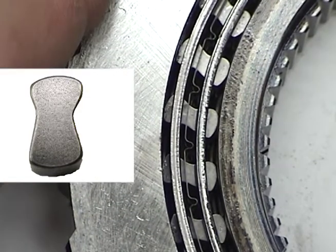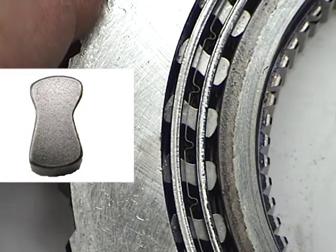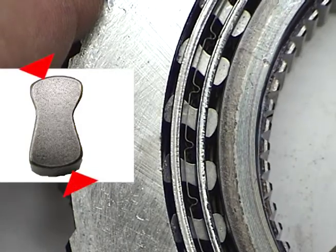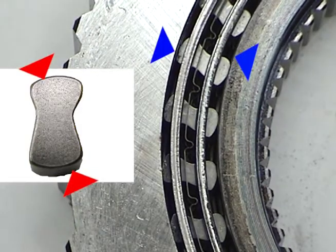When the sprags are rotated in one direction, they allow the clutch to overrun or free spin. This happens because the distance between the high spots on the sprags is less than the distance between the sprag races.